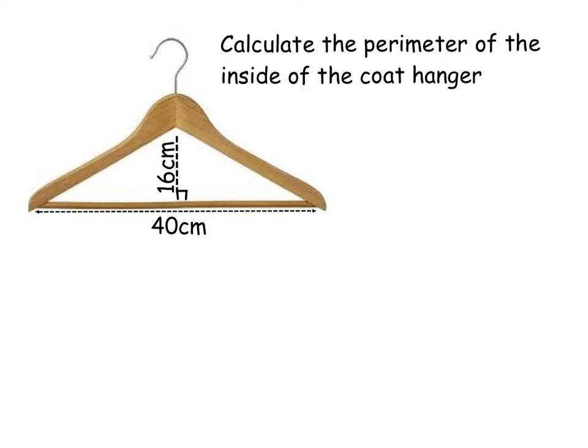So we have to calculate the perimeter of the inside of the coat hanger. Now we should know from common sense that the inside of that coat hanger is actually an isosceles triangle. And we forever tell you that Pythagoras can only be used in right angle triangles, but the truth is whenever you've got an isosceles triangle and you split that down the middle, you are effectively creating a right angle triangle. So we've got a right angle triangle here and the height is 16. If you've split that in half, it makes that base half of 40, which is 20.